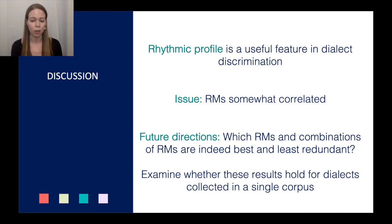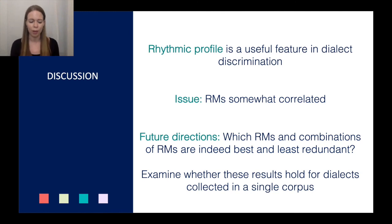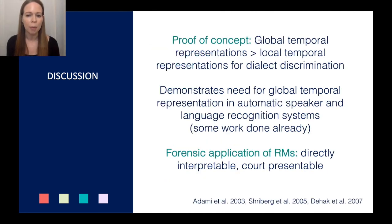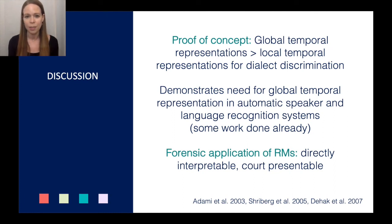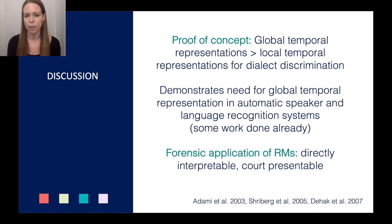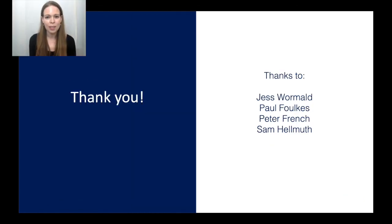It would also be good to examine whether these results hold for dialects collected in a single corpus. These results show a proof of concept: global temporal representations are more useful for dialect discrimination than local temporal representations, demonstrating a need for global temporal representations in automatic speaker and language recognition systems. Finally, the acoustic phonetic rhythm metrics also have forensic applicability — they are directly interpretable and should therefore be court-presentable. Thank you so much for listening, and many thanks to Jess Wormald, Paul Fawkes, Peter French, and Sam Helmuth for their help.